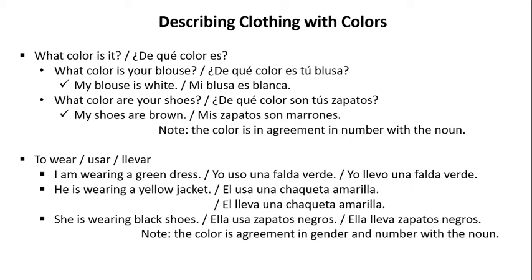Note: the color in this example is in agreement in number with the noun. To wear in Spanish, you can use one of two verbs: usar or llevar. For example, 'I am wearing a green dress' — yo uso una falda verde, or yo llevo una falda verde. 'He is wearing a yellow jacket' — él usa una chaqueta amarilla, or él lleva una chaqueta amarilla. 'She is wearing black shoes' — ella usa zapatos negros, or ella lleva zapatos negros. Note that the color is in agreement in gender and number with the noun in this last example.